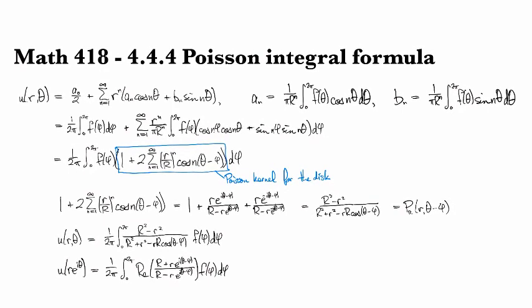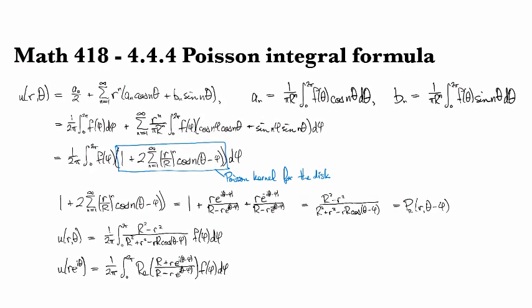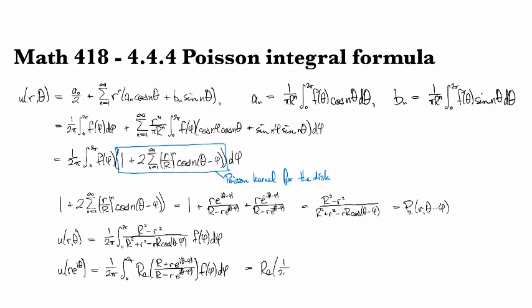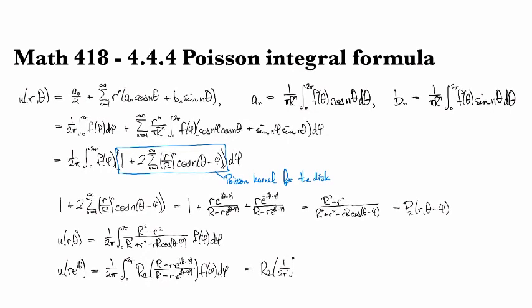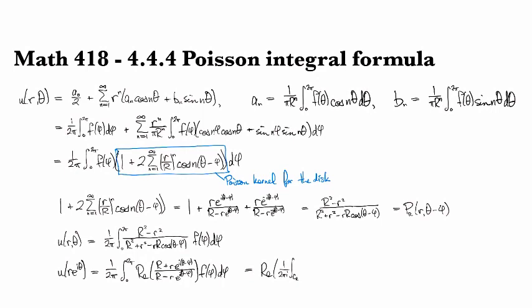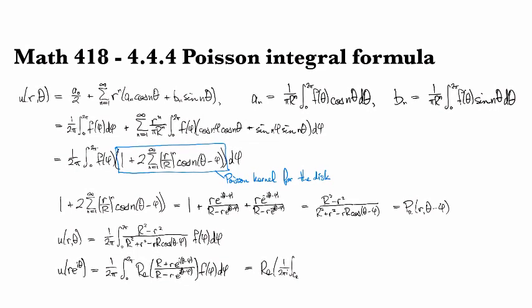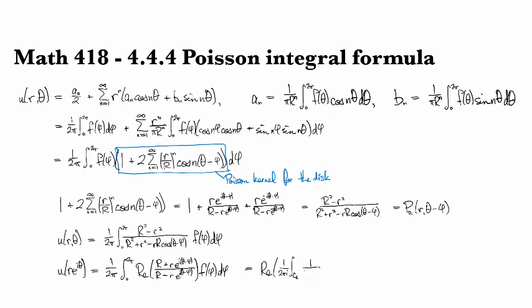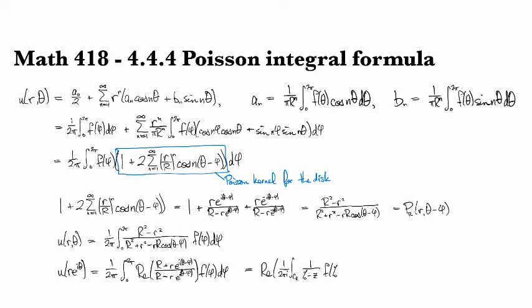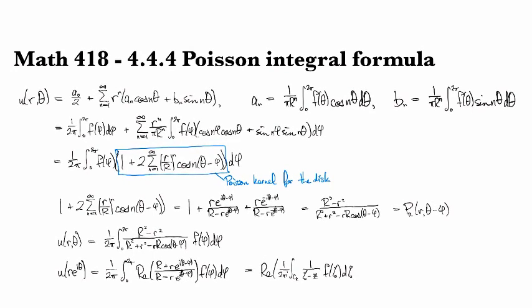And in fact, if you want to take it a little bit further, you can pull the real part out front. This is the real part of 1 over 2πi times the integral around the circle of radius r of 1/(ζ - z) times f(ζ) dζ.